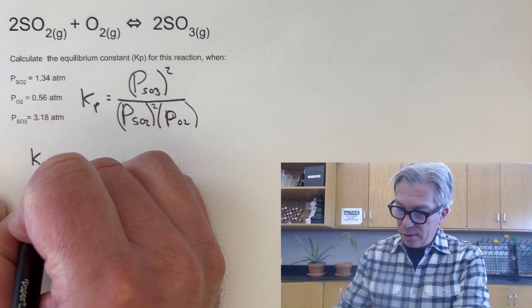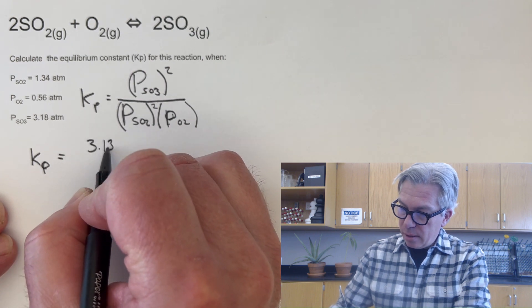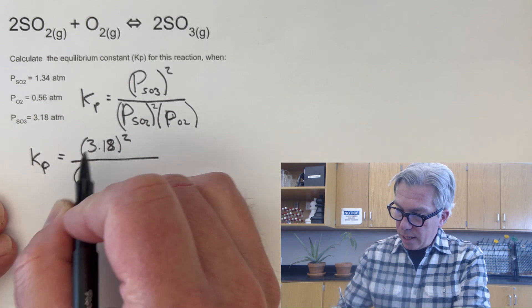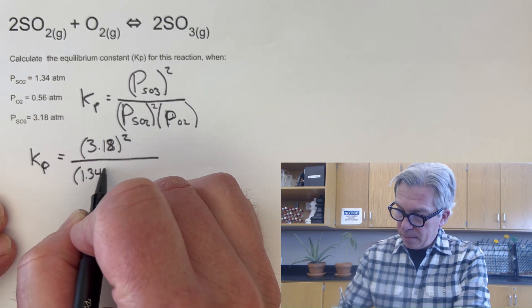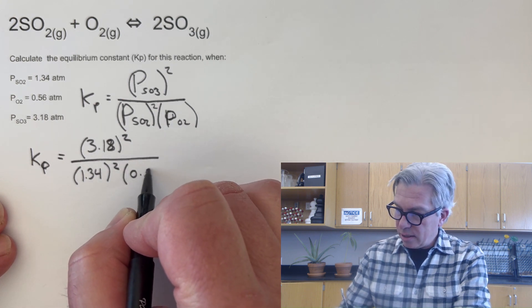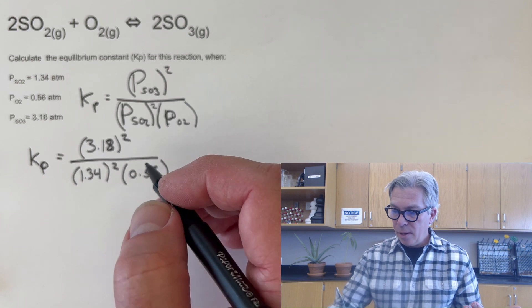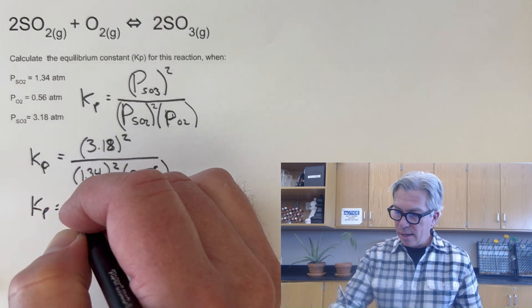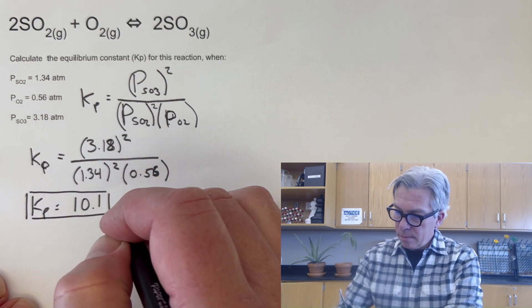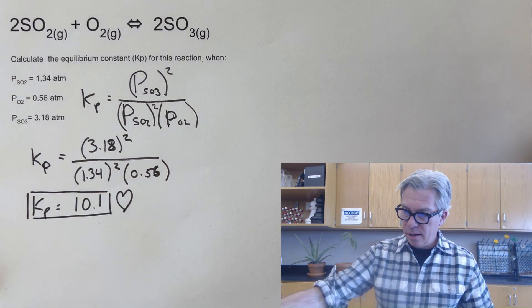So 3.18, we're going to square that and we'll plug in for the SO2, the 1.34, and we're going to square that and the pressure of the oxygen, which is 0.56 atmospheres. I'm just excluding units here because the final answer is not going to have a unit anyway. But if I calculate this with my calculator, I end up with 10.1 as my Kp value. So plug in your pressures just like before, and you can get your Kp values.